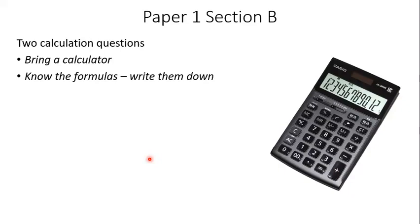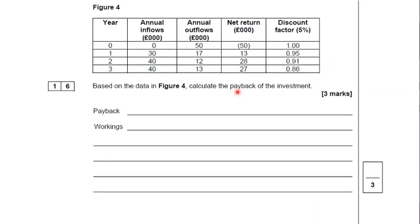Just in terms of answering these questions, as I mentioned, bring a calculator and know the formulas. Once you know the formula and know what you're going to do, if it's appropriate, write the formula down. You may get a mark just for writing the formula down. The second thing is to show all of your workings in that space provided.